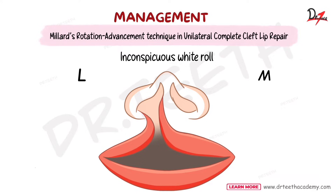The white roll is located at the vermilion border, which has an upper border and a lower border — the border between the skin and the lip. The upper line of this border is known as the white roll. In cleft lip cases, this white roll is inconspicuous, meaning not really visible.